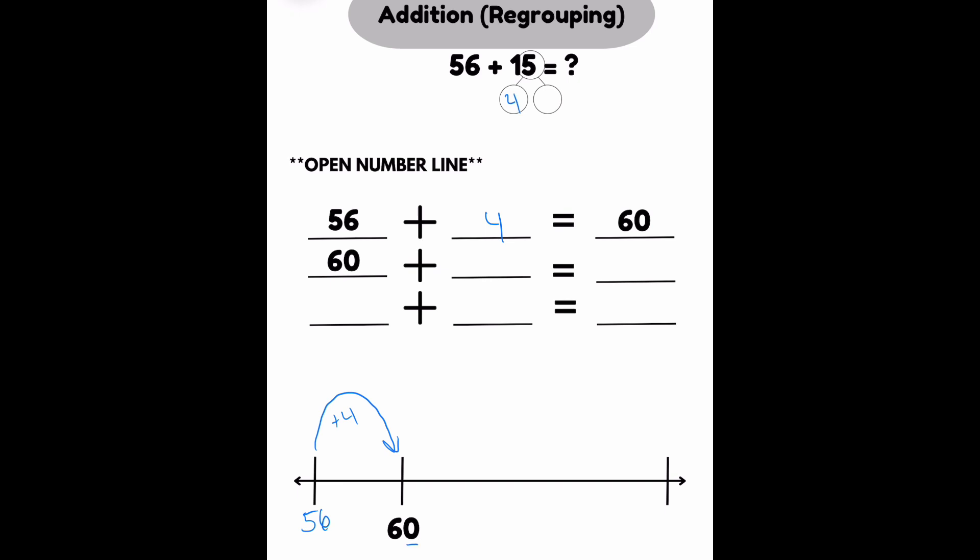56 plus 4 gets me to 60. Since I'm at a number that ends in 0, I'm going to focus on my 10s place on that 15. And I see that I have 1 ten. So on my next jump, I'm going to move 1 ten, which is 10. So I know 60 plus 10 gets me to 70. Now I'm going to look back at my bond, and I still have a number missing. I know that this bond is the same as saying 5 minus 4. So the missing number would be 1. So I can say 70 plus 1 equals 71.